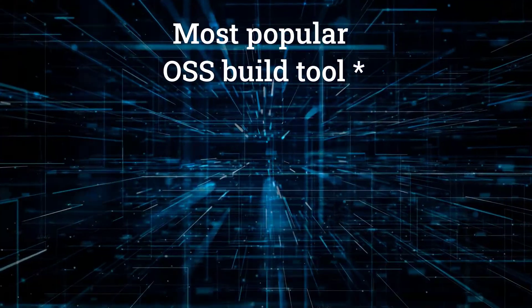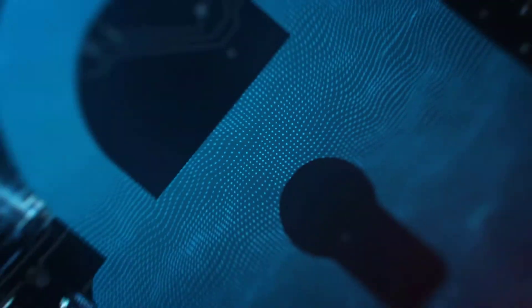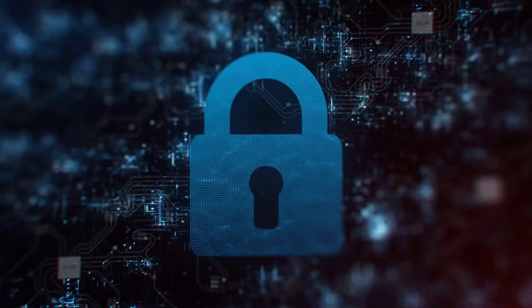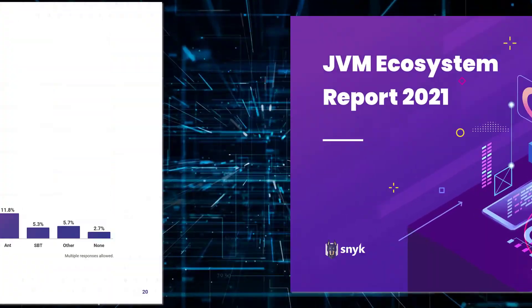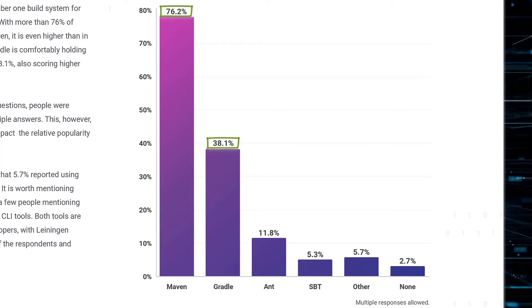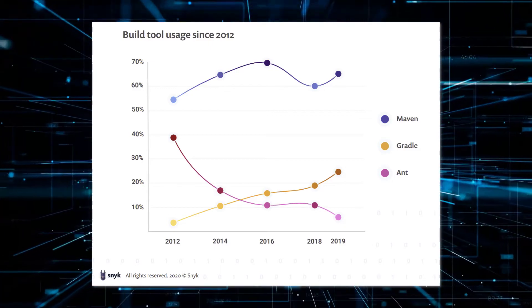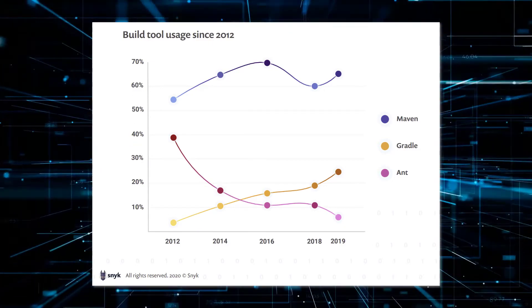So what's the state of play now with these two JVM build giants? Gradle is currently the most popular build tool for open source JVM projects on GitHub, but that doesn't include the thousands of private repositories belonging to individuals and companies across the world. In this recent survey of JVM developers in general, 76% said they use Maven, whereas only 38% use Gradle. If we look at the historical data though, there is an upward trend, so it would be fair to say that Gradle usage will continue to grow in the next few years.